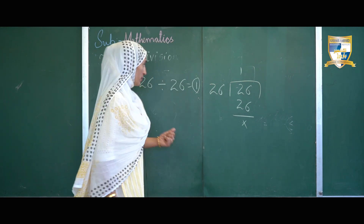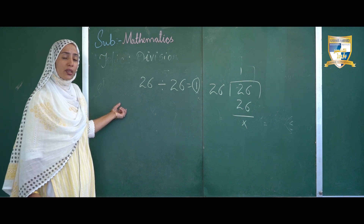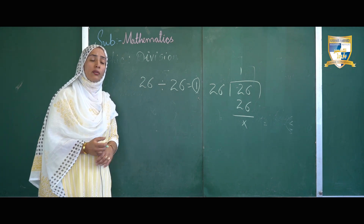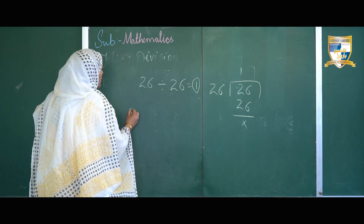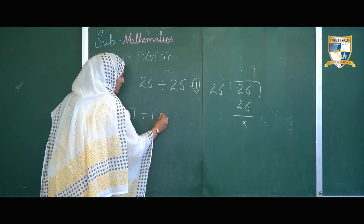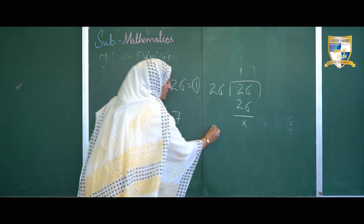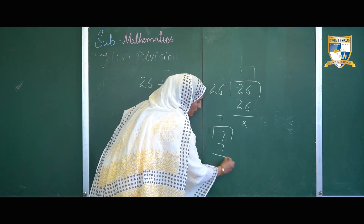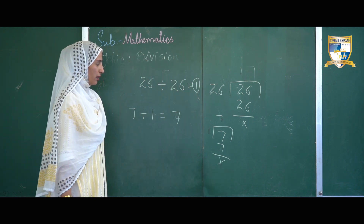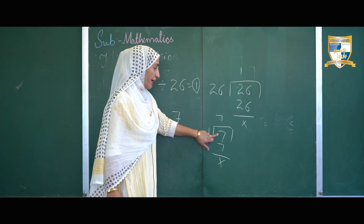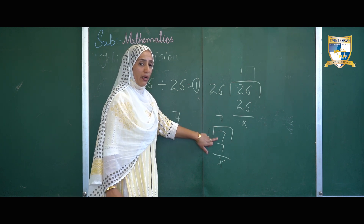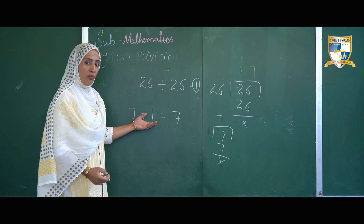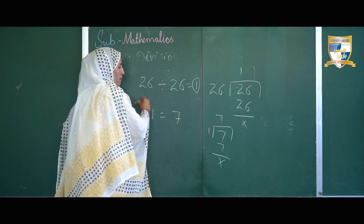The second division fact: when a number is divided by 1, the quotient is always equal to the number itself. For example, 7 divided by 1 equals 7. When any number is divided by 1, the quotient is always equal to the dividend — this holds for every number.